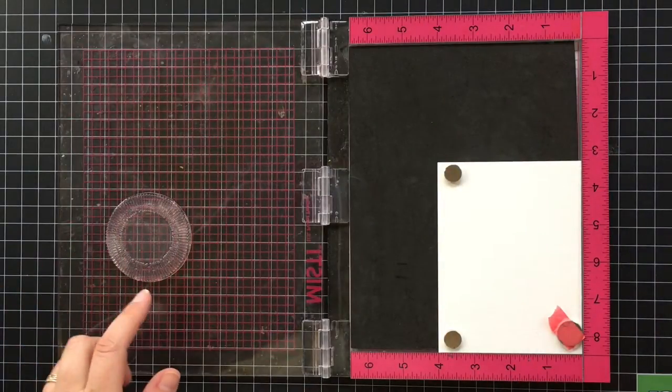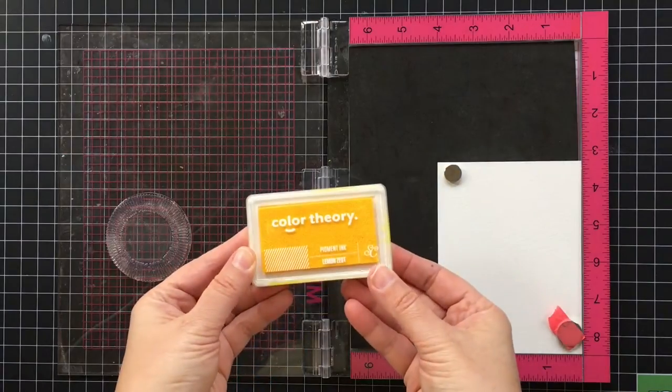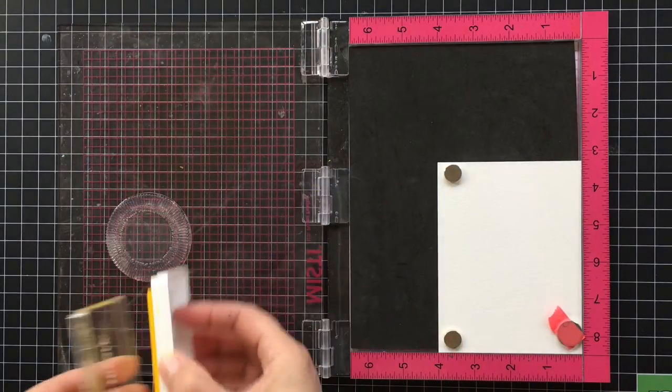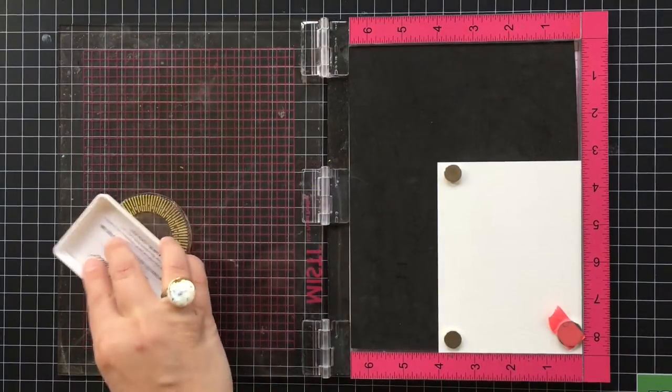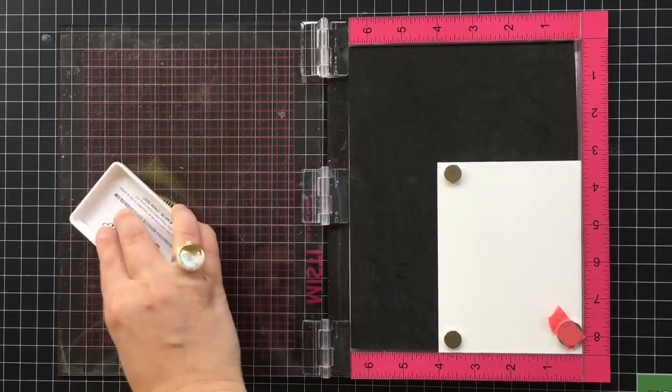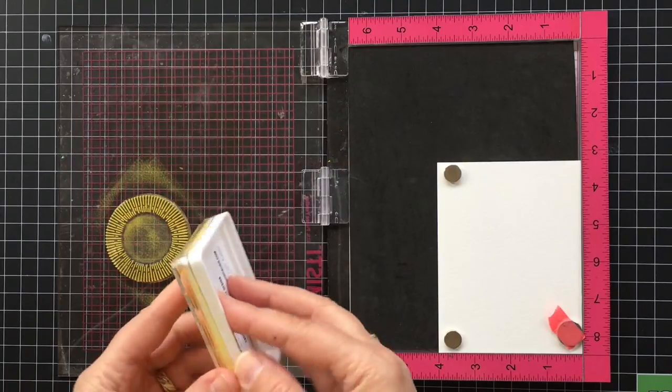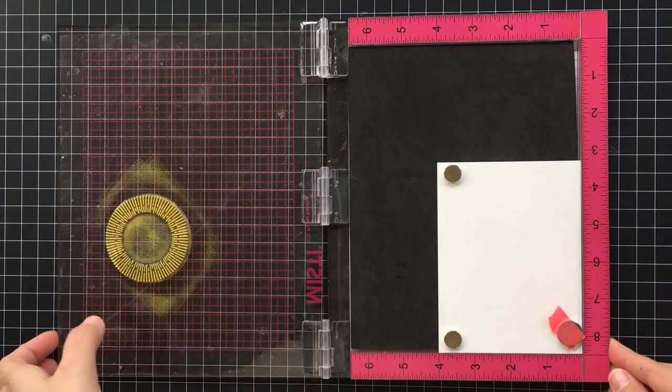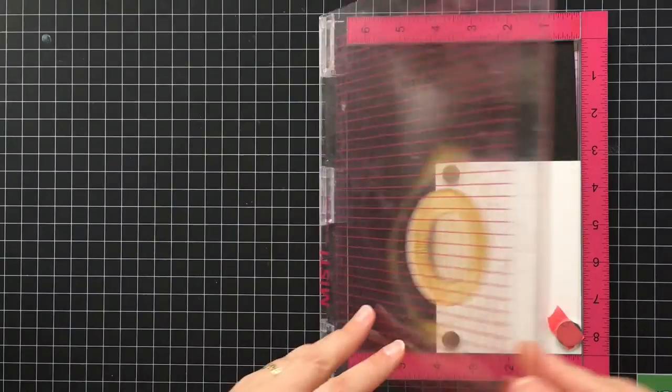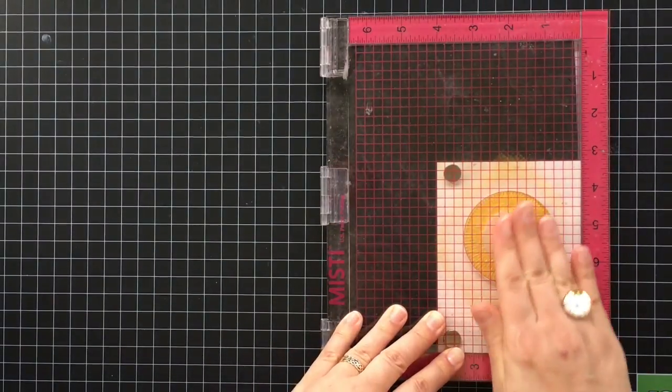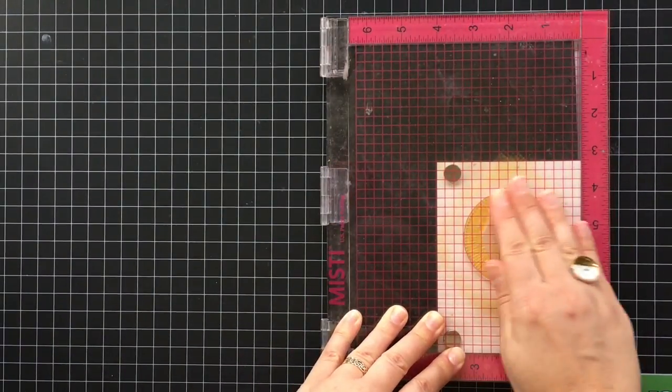Then you can go ahead and ink up your stamp like normal. Here I'm using the Studio Calico Color Theory Sunny Day pigment ink. This is pigment ink that we're using today for these techniques. Once your stamp is all inked up, you can just give it a good press and you're ready to go.